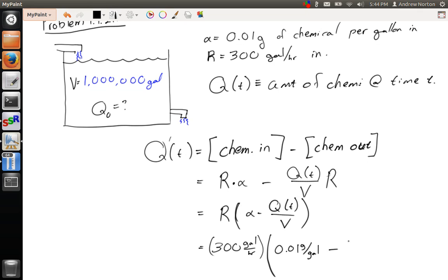Then minus q of t will be just q of t, and that's in grams. And V is going to be 10 to the 6th gallons. This is then our differential equation, q prime of t is equal to that.